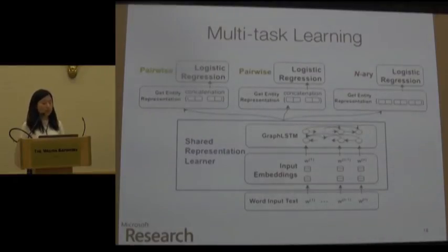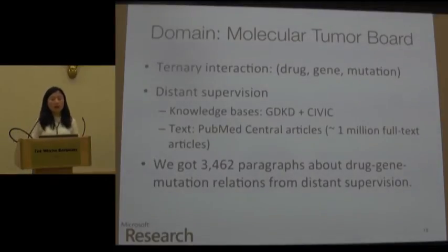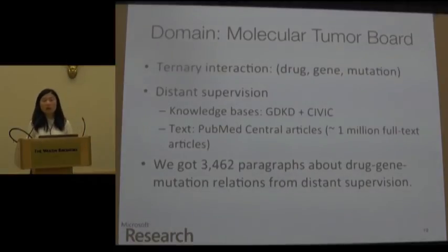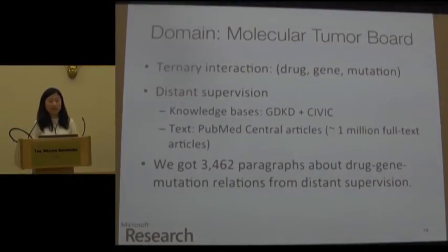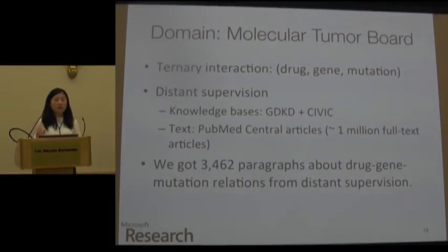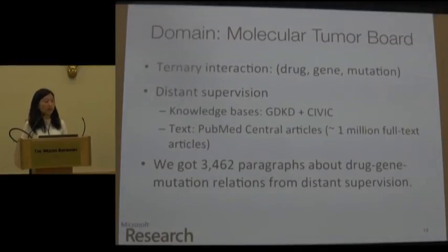We experiment with a molecular tumor board dataset to test how our framework performs, focusing on the ternary relation between drug, gene, and mutation. We obtain training data using distant supervision. The knowledge bases we use are DGIdb and CIViC, and the test set consists of PubMed articles. There are about one million full-text articles, and with this method we have 3,462 paragraphs about drug-gene-mutation interactions. We randomly sample negative examples at the same size as positive examples for training.